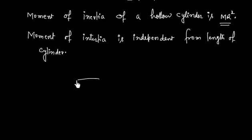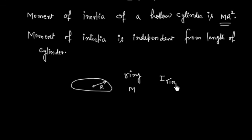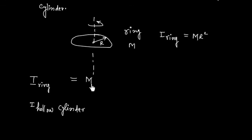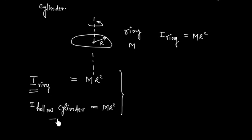If you recall the moment of inertia of a ring of mass M and radius R, the moment of inertia about an axis perpendicular to the plane of the ring is MR squared. So you can see that the moment of inertia of a ring and a hollow cylinder both have the same value MR squared, provided they have the same mass and same radius. This means the length of the cylinder does not matter — length does not affect moment of inertia.